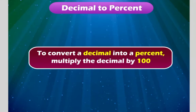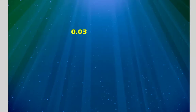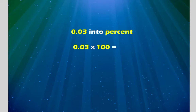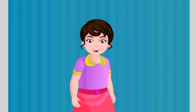To convert a decimal into a percent, multiply the decimal by hundred or shift the decimal by two places to the right. Thus, 0.03 into percent can be written as 0.03 into hundred is equal to 3 percent. Similarly, 0.5 into percent can be written as 0.5 into hundred is equal to 50 percent.